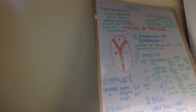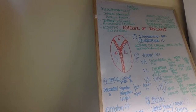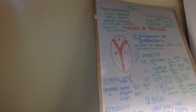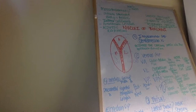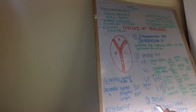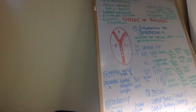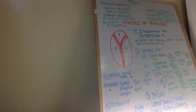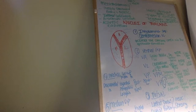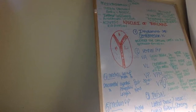Those are the main ventral groups. For the dorsal group, you just need to know the names and what they're involved with. The dorsal group includes the lateral dorsal (LD), lateral posterior (LP), and pulvinar. The pulvinar is associated with sensory function — that's essentially all you need to know about it for now.